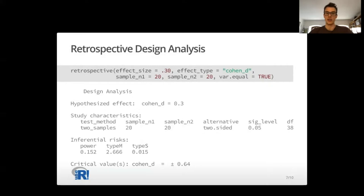And then we have the inferential risks. In this case, we can see we are not doing really well. We've got a really low level of power, and the type M error is really high. We also have around 1% probability to get our results in the opposite direction.